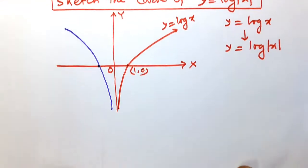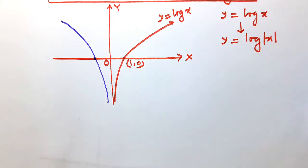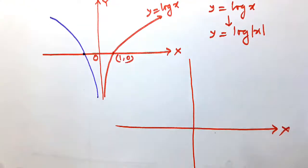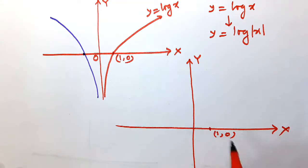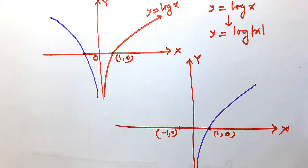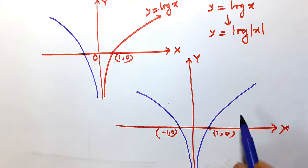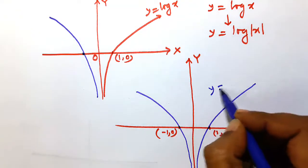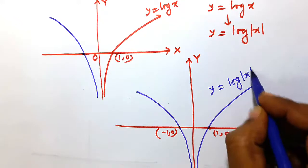So ultimately we get the full curve. Drawing again clearly: the x-axis, y-axis, with points (1, 0) and (-1, 0) marked. The graph of y = log|x| passes through both these points, with one branch on each side of the y-axis.